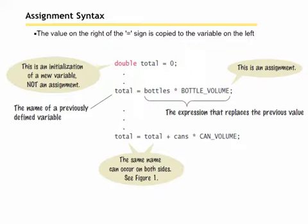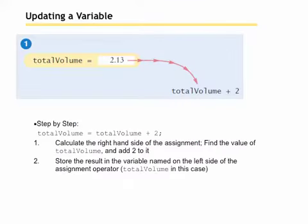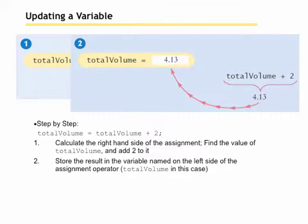The expression, whatever it turns out to be, will replace the value that was previously in total. We can also put the name on both sides of the assignment operator, so total equals total plus cans times canVolume. It'll take whatever's in total and add it to cans times canVolume, whatever that turns out to be, add those two together, and store the result back in total. So that is perfectly legal. Notice on each of these assignment statements that you've just got one location on the left hand side of the assignment operator, one variable name on the left hand side of the equal sign. To put an expression over there like total plus total would be wrong. You only have one location on the left hand side of the equal sign. So if we say totalVolume equals 2.13 and then we say totalVolume equals totalVolume plus 2, that totalVolume plus 2 results in 4.13 and would store the result back in totalVolume. So it calculates the stuff on the right and then puts it in the location on the left.